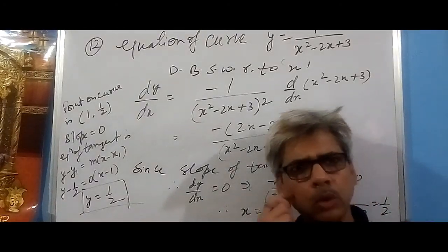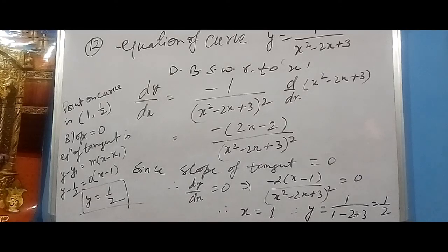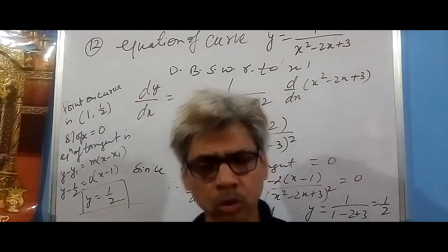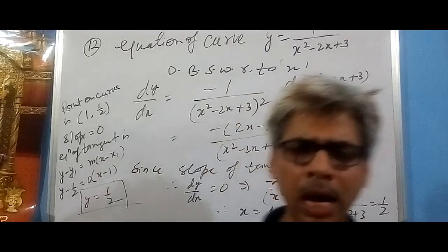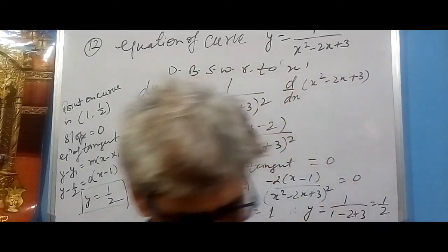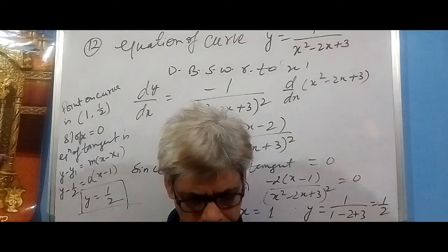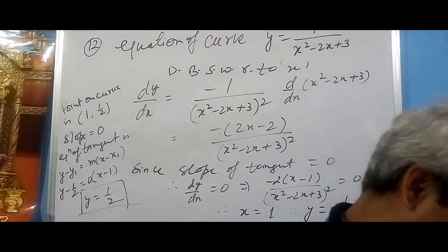For question 14, an equation and a point are given. Based on examples 19 and 20, differentiate the equation of the curve, then substitute the given x or y value into the derivative to get the slope. Then using the point and slope, find the equation of tangent. Even if it's not straightforward, you can ask me.